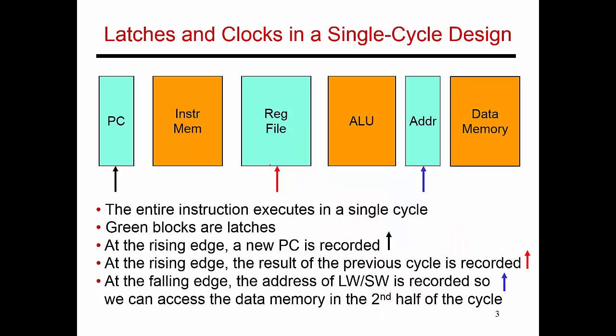I can distill that figure into a simpler figure, where I basically say that there is an instruction memory stage, there's a register file that has to be read, there is an ALU that does the number crunching, there's a data memory unit that brings values back and forth from memory, and then ultimately you're going to update the contents of the register file with whatever result was produced in this instruction.